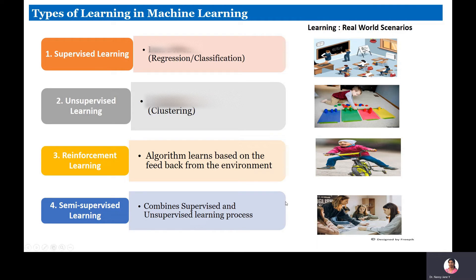Semi-supervised learning is the fourth type of learning. Consider a tuition center with a supervisor or teacher, but the setup is a little different. Only the weak students are trained by the supervisor; the rest of the students learn on their own. This is semi-supervised learning — a combination of supervised and unsupervised learning.